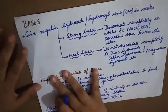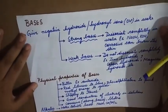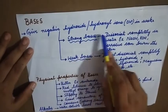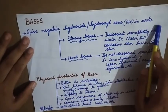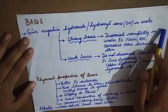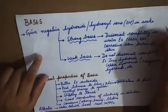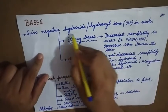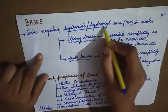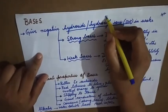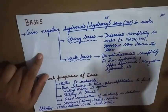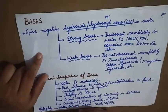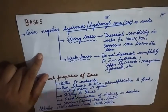Next we will study bases. A base gives a negative hydroxide or hydroxyl ion (OH⁻) in water. In acids, we studied that it gives rise to H⁺. Here in a base, we see it gives rise to OH⁻ in water. Remember: acid gives H⁺, base gives OH⁻ in water.